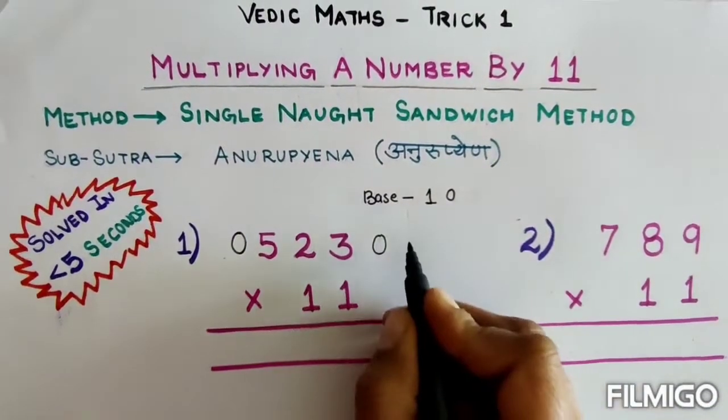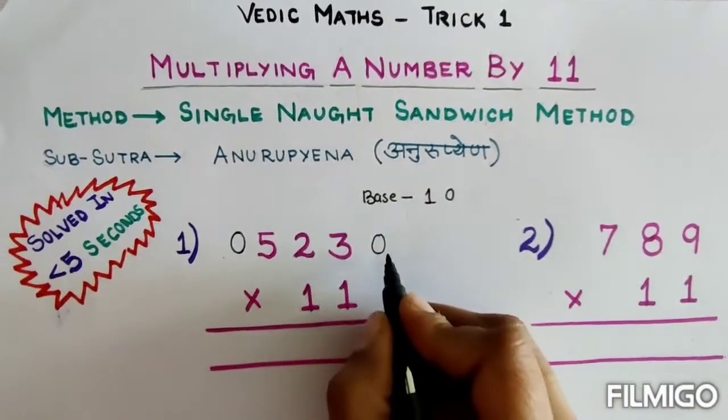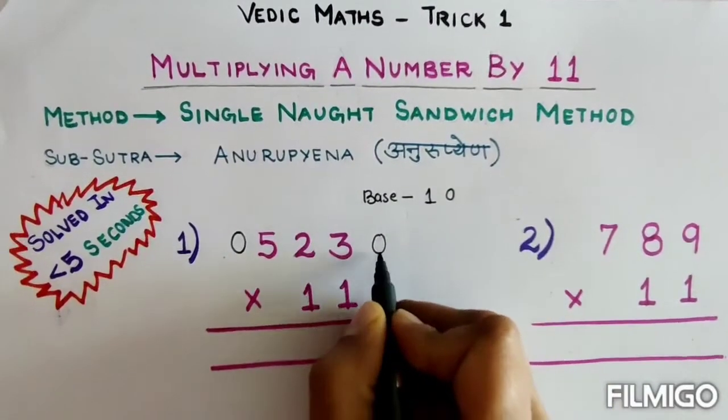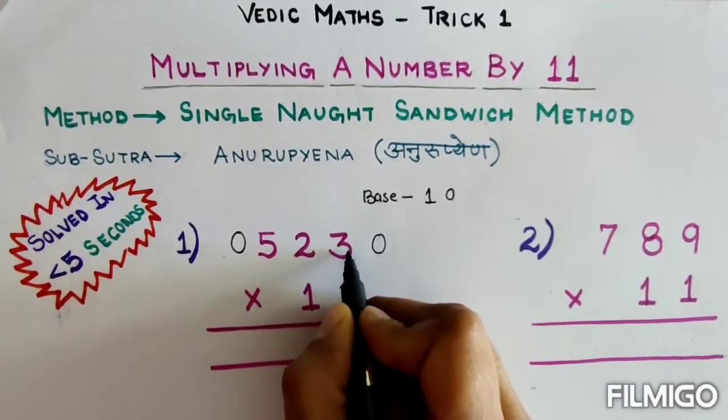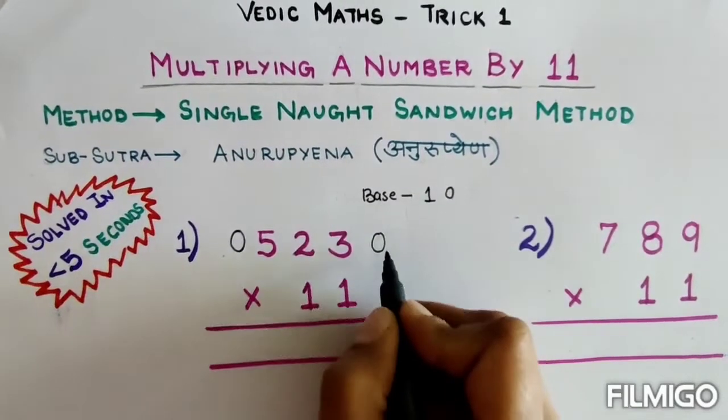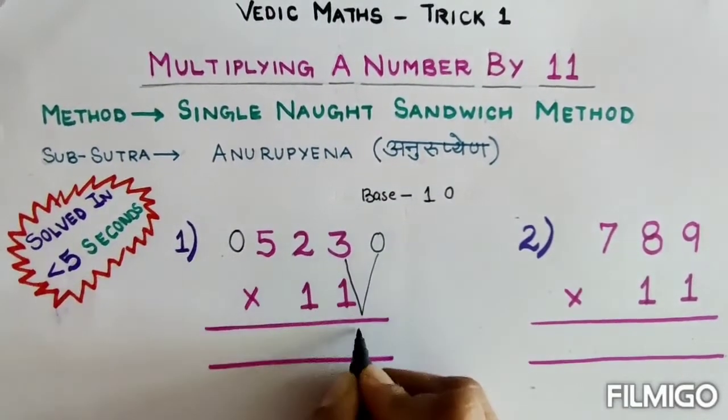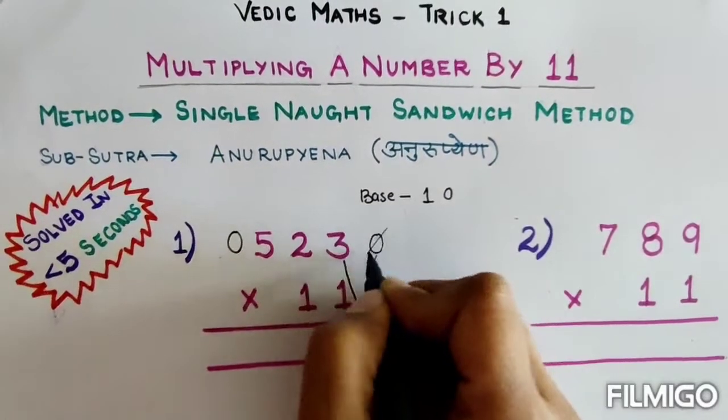Now let's see how we will add and get the answer. I will start adding two numbers at a time from right to left. Now I will solve this. 0 plus 3 is 3. I will cross this 0.